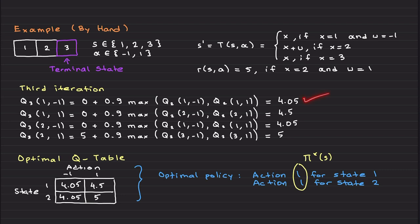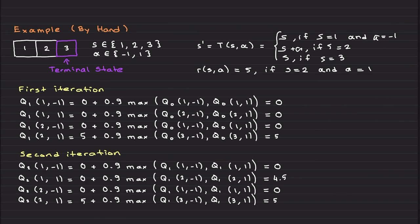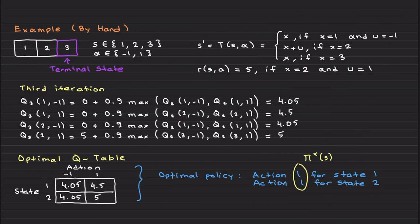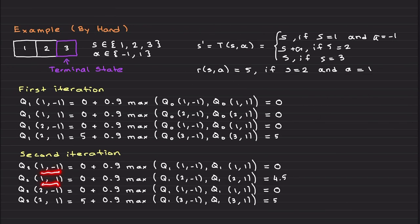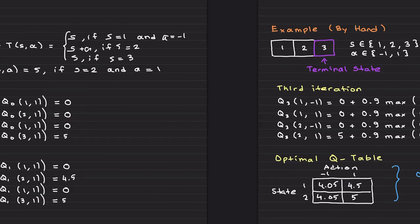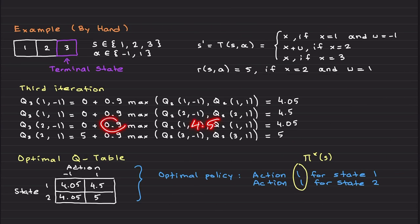In the third iteration, for state two, action minus one: no immediate reward, and looking at Q2 values for states one and two — one of them is zero, one of them is 4.5. Choosing the maximum of 4.5, multiplied by 0.9, gives 4.05. So the Q value for (1,1) becomes 4.05 after the third iteration.